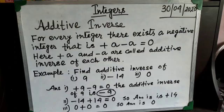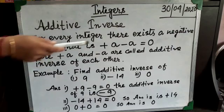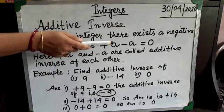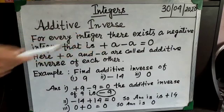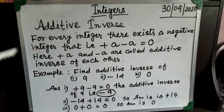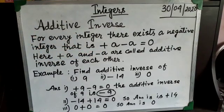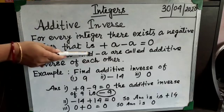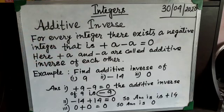First of all you have to know what is additive inverse. Here I have written that. For every integer there exists a negative integer. Here I have shown you one example, that I am having plus a. If I add minus a with it, the total result becomes zero. That means plus a and minus a are called additive inverse of each other.